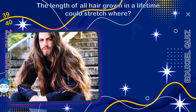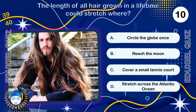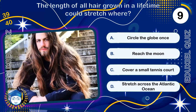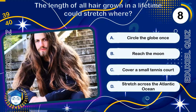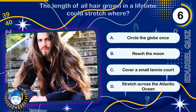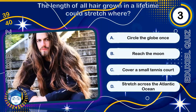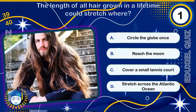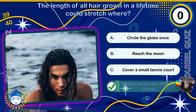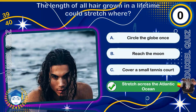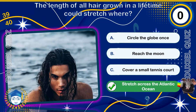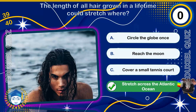The length of all hair grown in a lifetime could stretch where? Across the Atlantic Ocean. Given an average growth rate, the total theoretical length of lifetime hair growth is estimated to be over 950 kilometers, 590 miles.